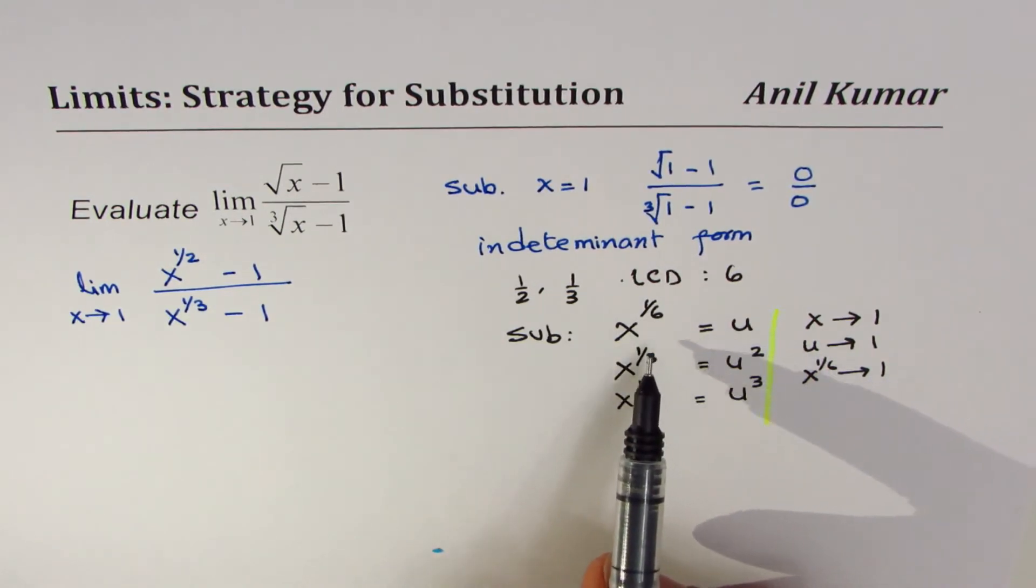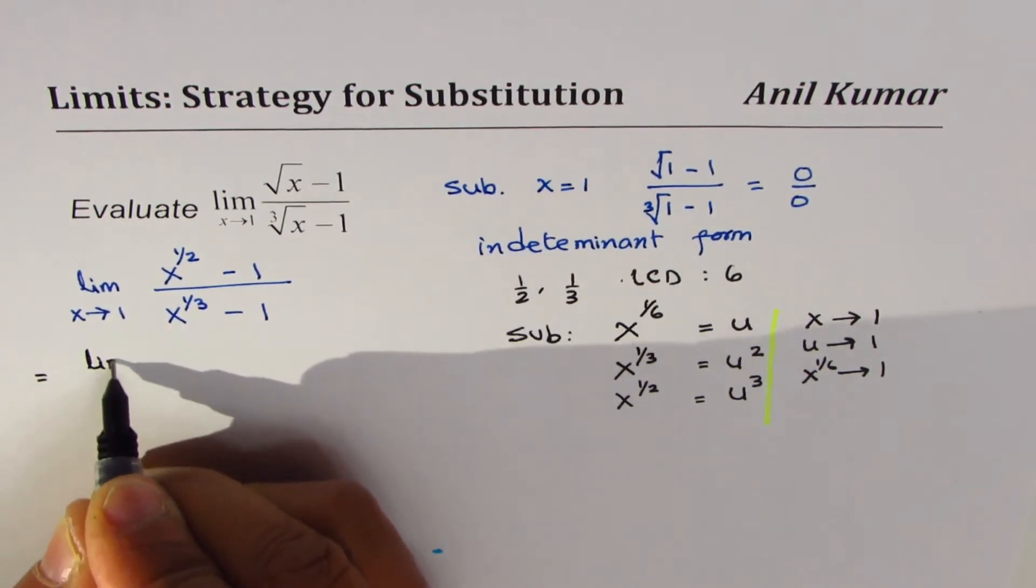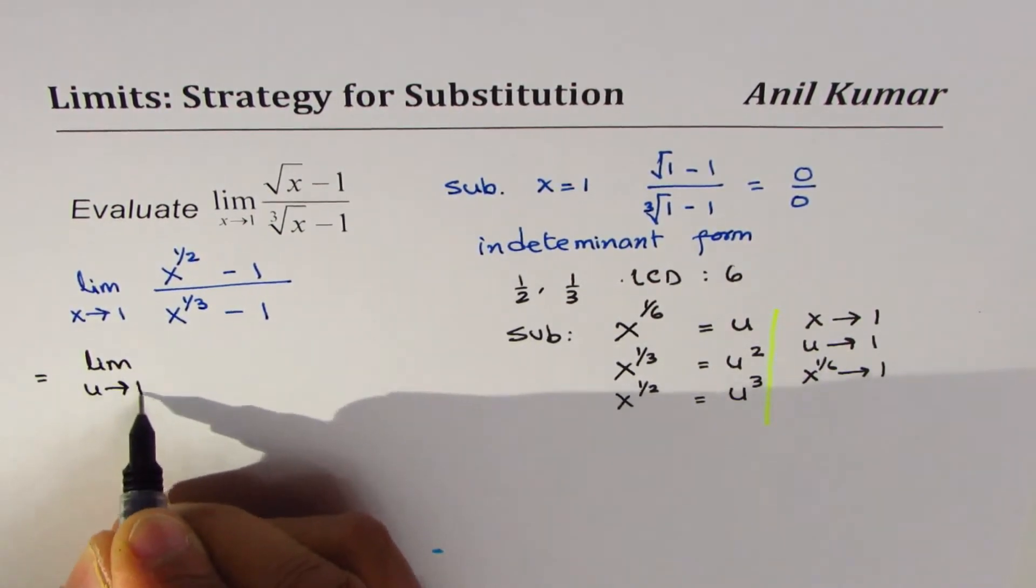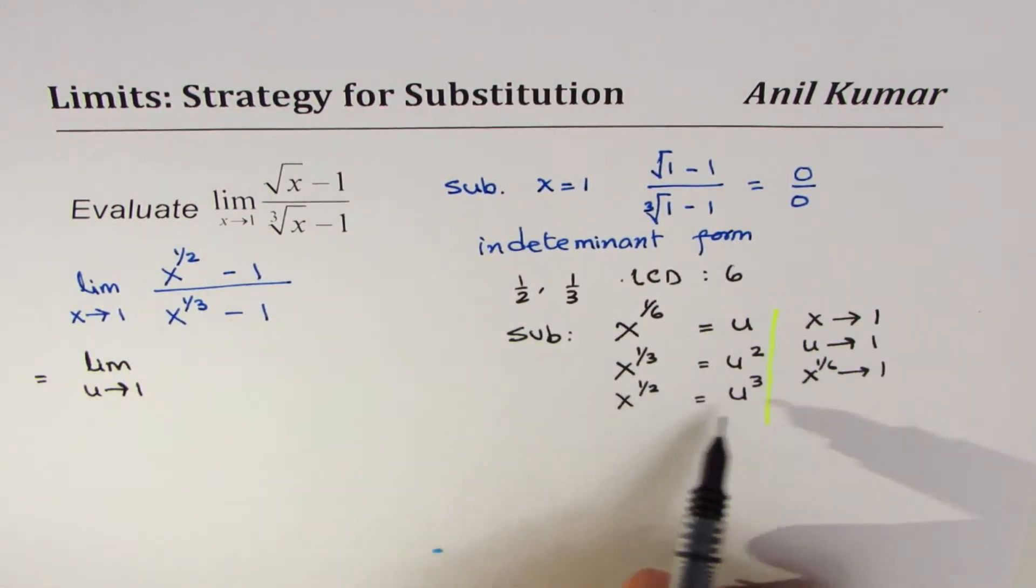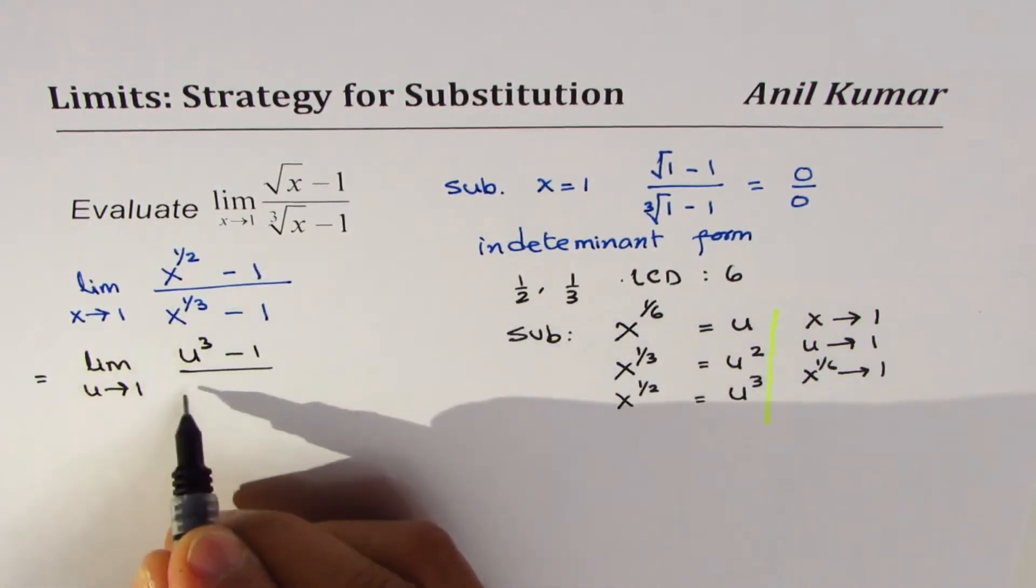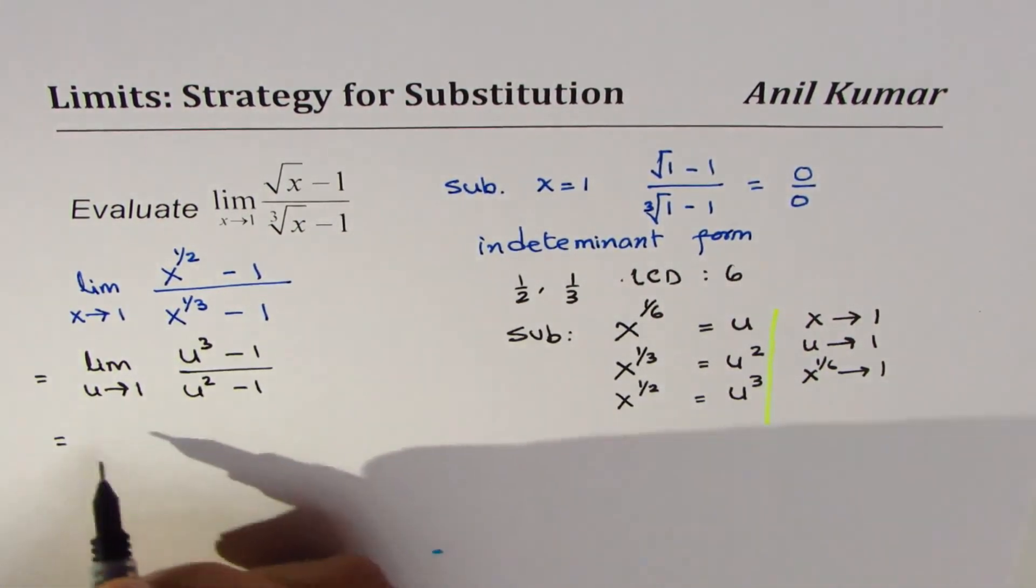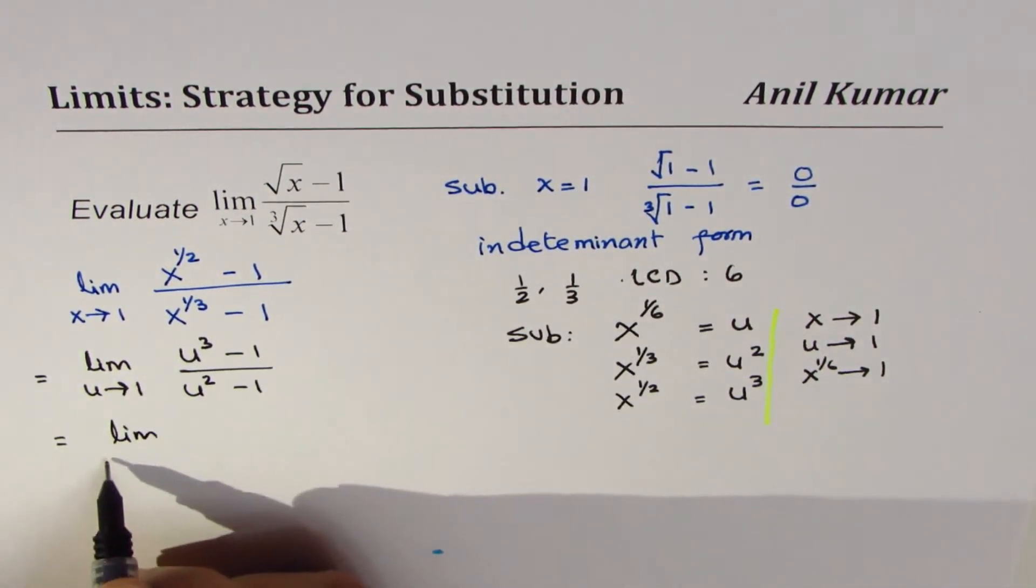So we could now write this as equal to limit u approaches 1, x to the power of half is u cubed minus 1, and this is u squared minus 1. Now we can factor this.